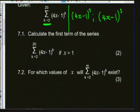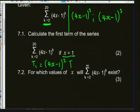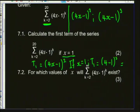The first term is (4x − 1)² with k = 2. Substituting x = 1: T1 = (4(1) − 1)² = (4 − 1)² = 3² = 9. Two marks.